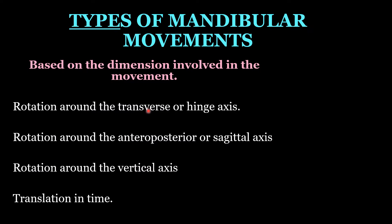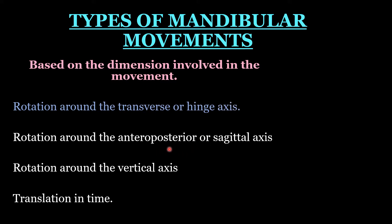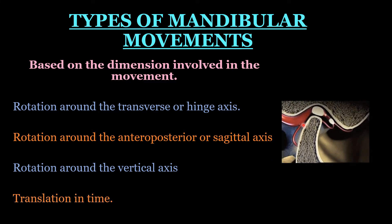Now let us understand the types of mandibular movements. Mandibular movements can be classified on many bases. First, based on the dimension involved in the movement: when the movement occurs, first rotation occurs followed by translation. Rotation can be around the transverse or hinge axis, around the anterior-posterior or sagittal axis, or around the vertical axis, followed by translation.